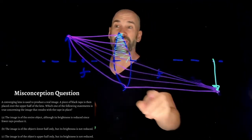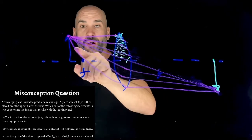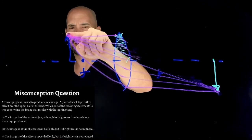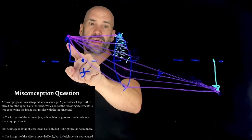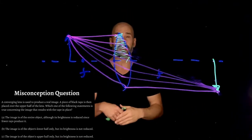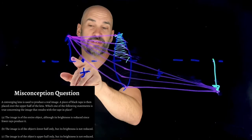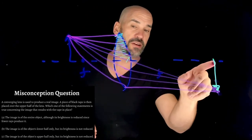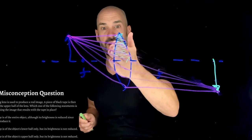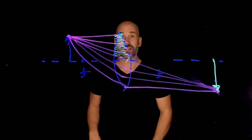That means every point of the object still forms an image — it's just that only half the rays are forming it. The answer is A: the brightness is reduced because fewer rays reach the image, but that position of the object is still there. The whole image appears — whether the tip of a bird, the beak, or the feet — just less bright because half the beams are cut off.